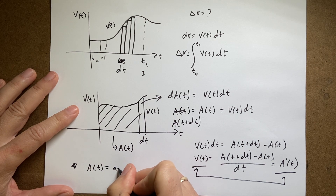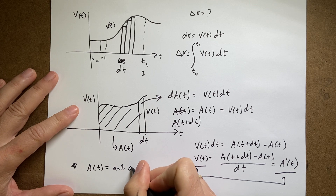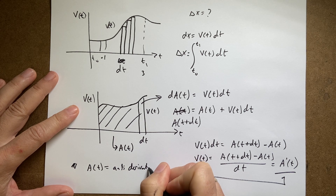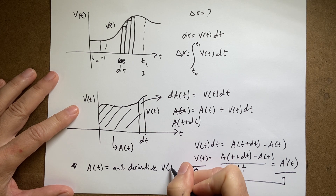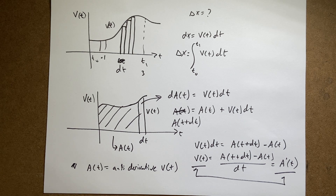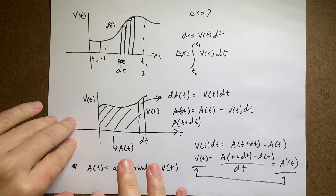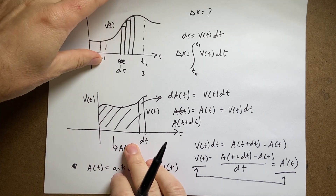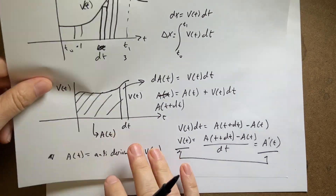So A(t) equals the antiderivative of v(t). If you can figure out the backwards derivative, you have integrated. There is another important step — evaluating at the limits of integration — that's another part of the fundamental theorem of calculus. Let me just do an example and hopefully it will all come together.